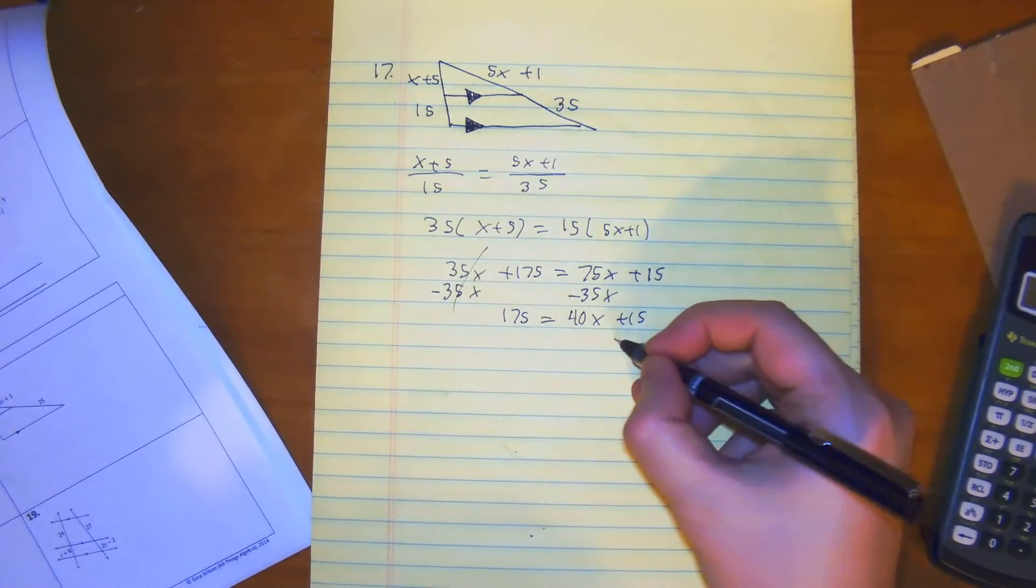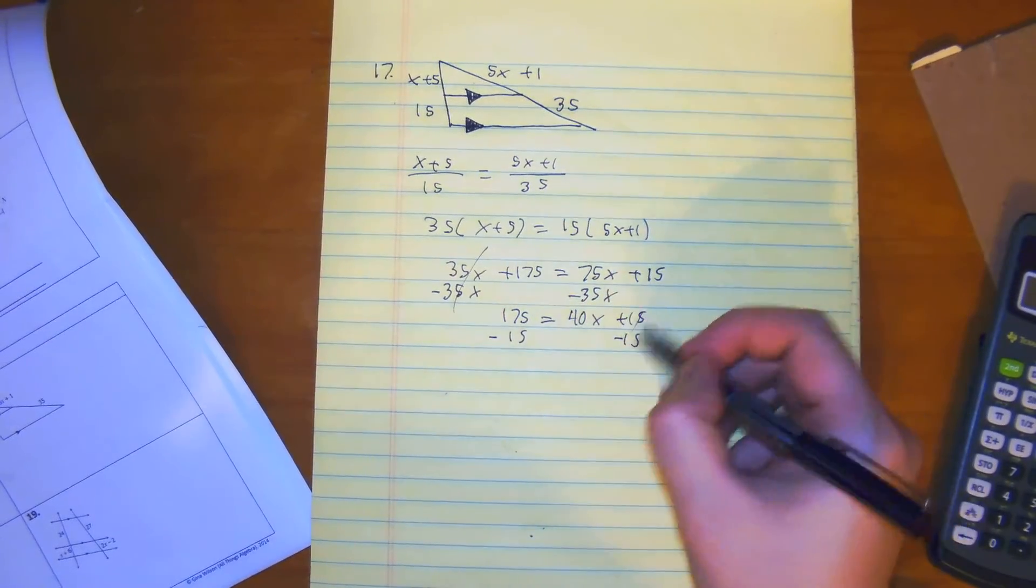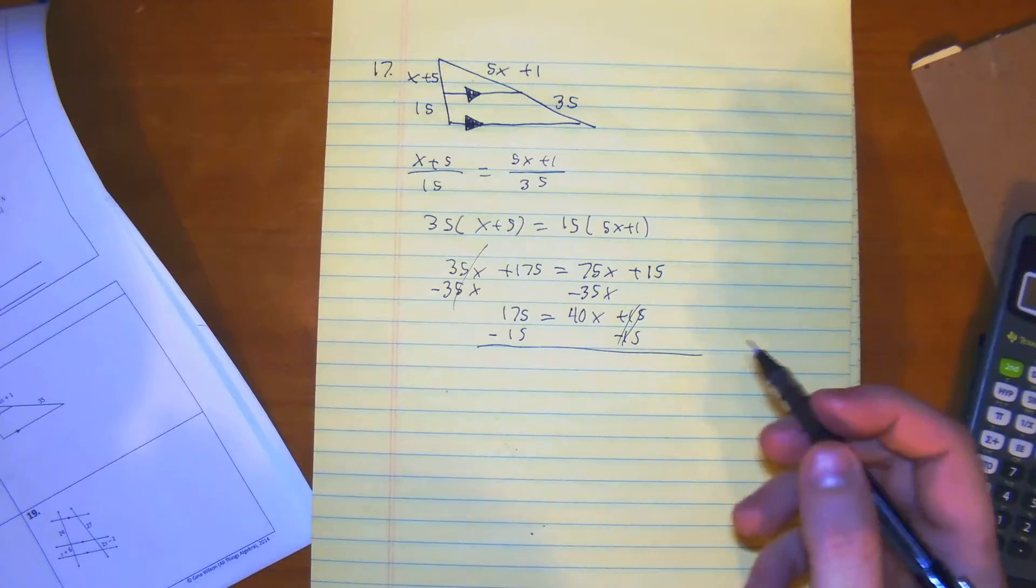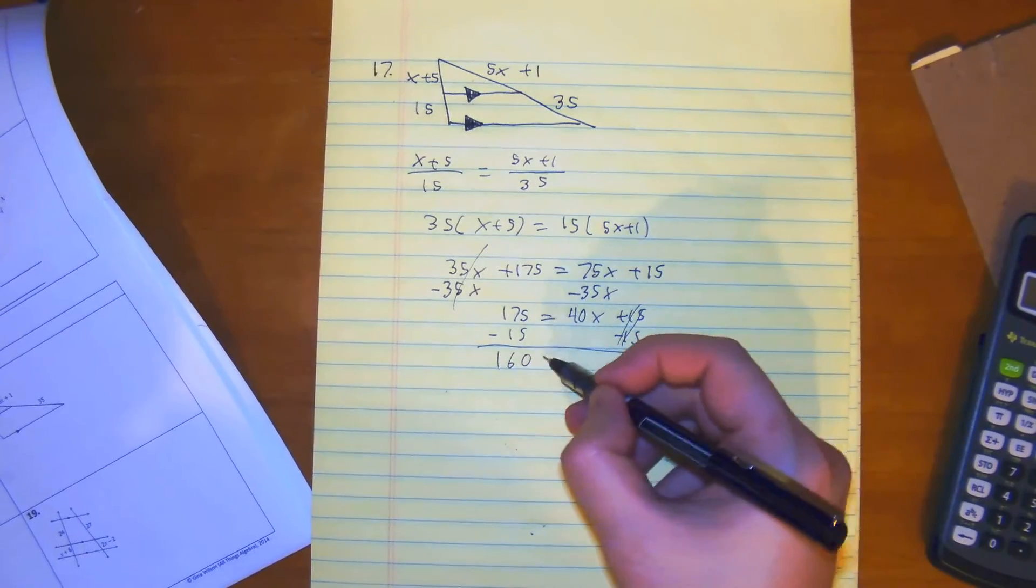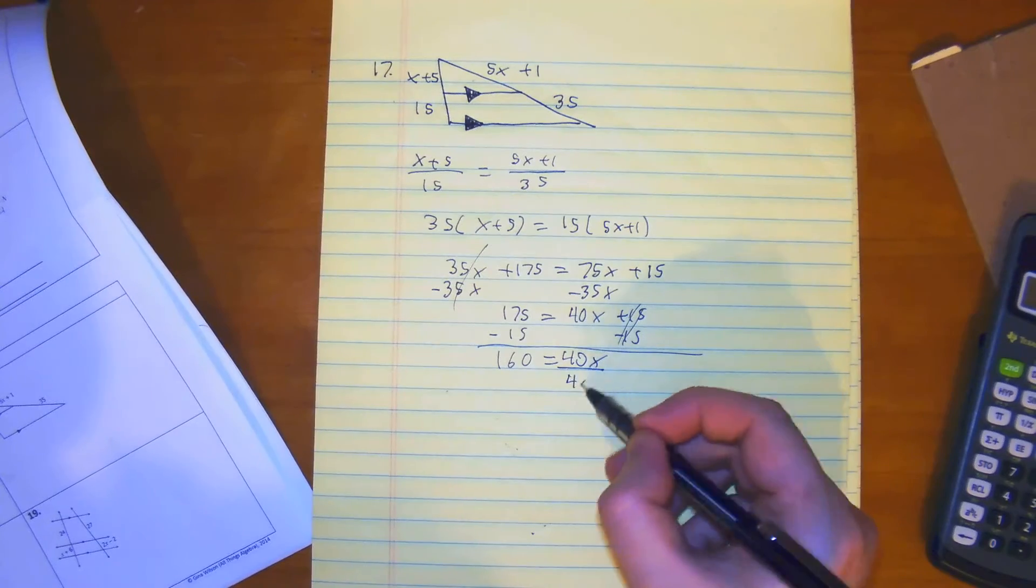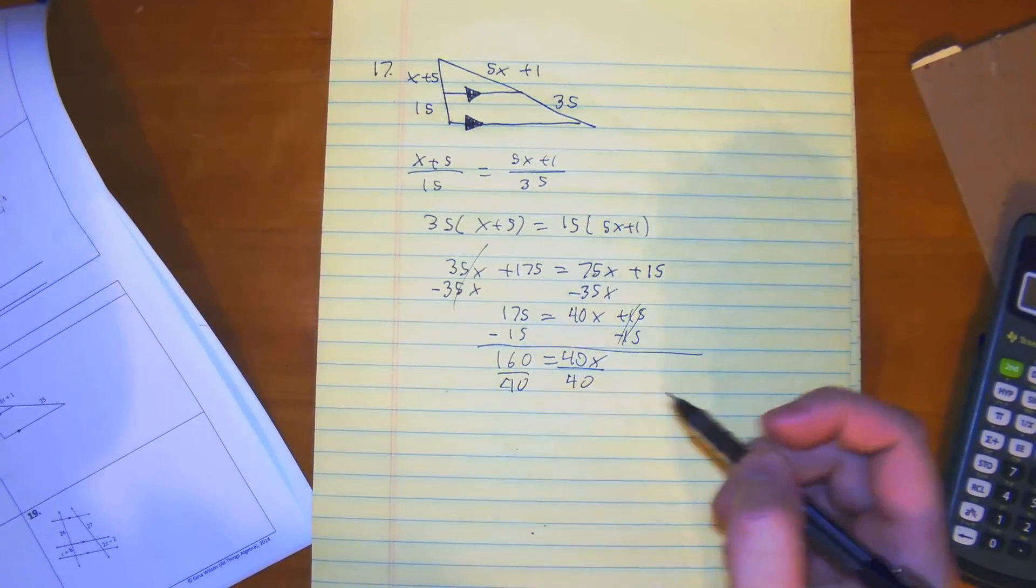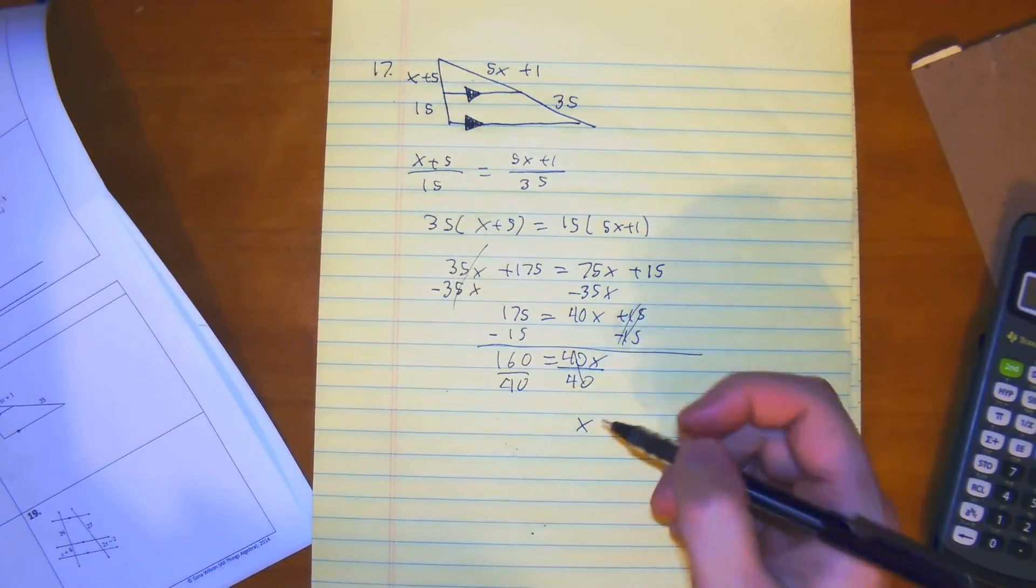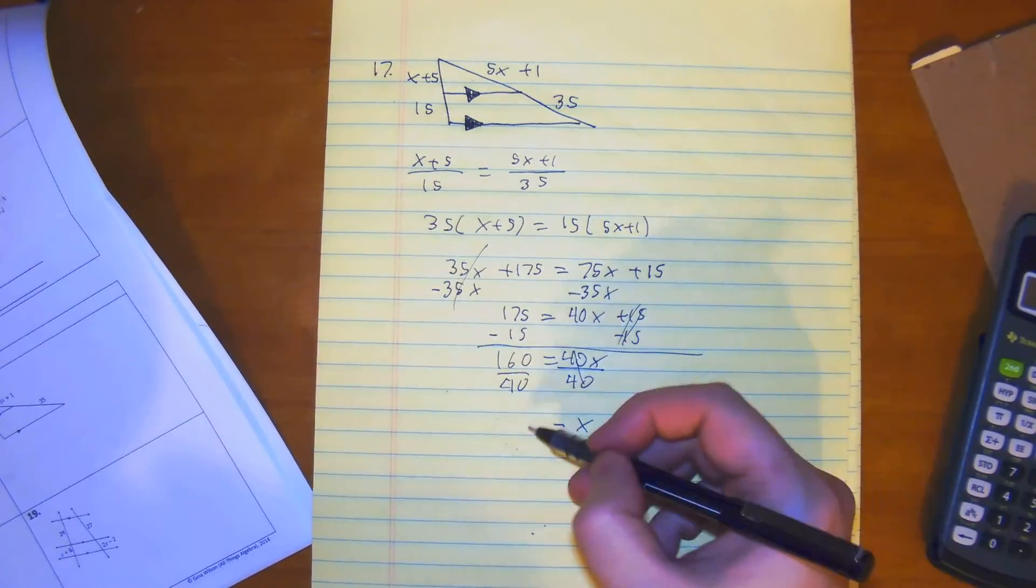From here, I'm going to subtract 15 from both sides, we're going to get 160 is equal to 40x. Divide both sides by 40, we get x is equal to 40.